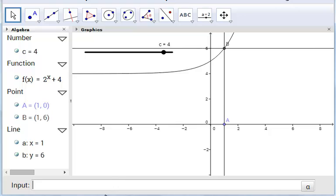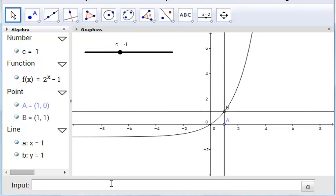Likewise, when c equals minus 1, it's passing through at y equals 1. That's 1 less than where it was passing through originally, which was 2.